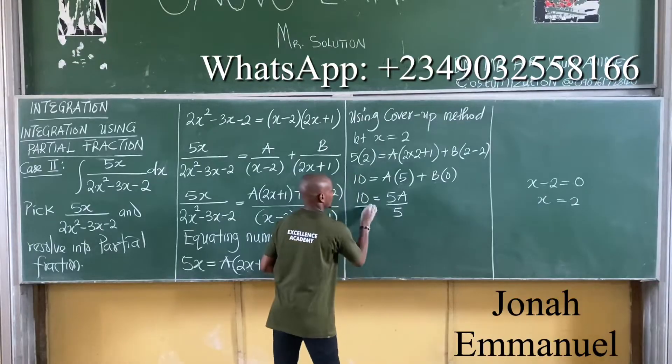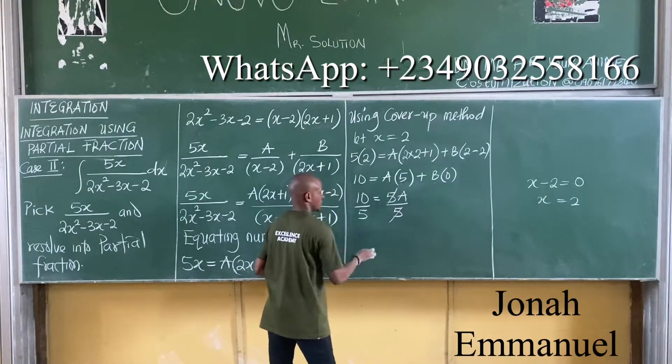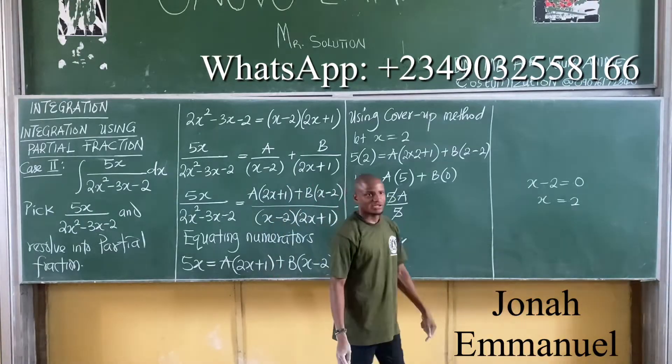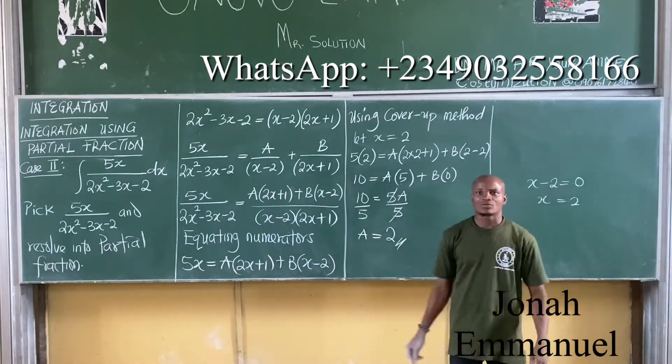Divide both by 5. This cancels. So A is equal to 10 over 5, which is 2. Cover up is short, gives the answer very fast. So A is 2.